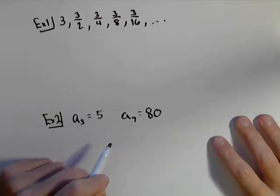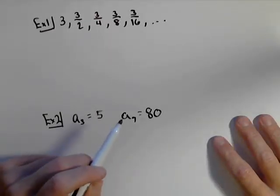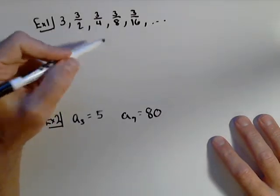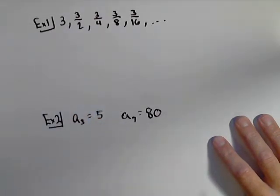In this video, we're going to look at two different ways of coming up with the general term of a geometric sequence. One given a list of numbers, and one just given two of the terms.